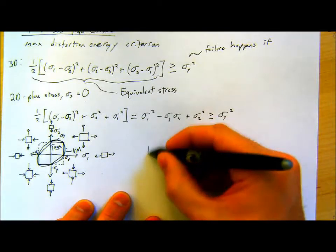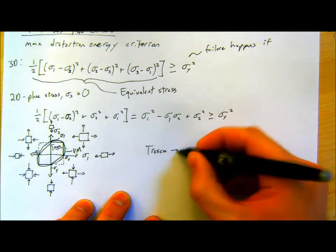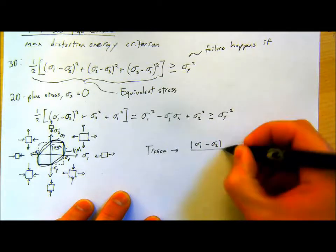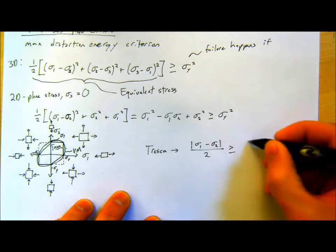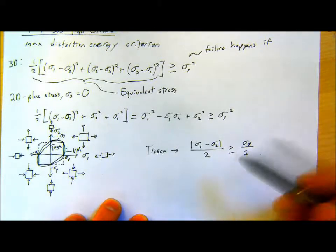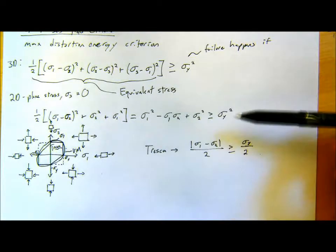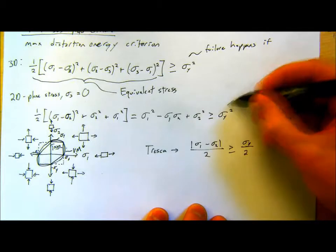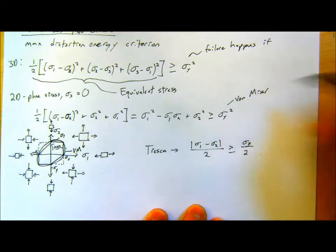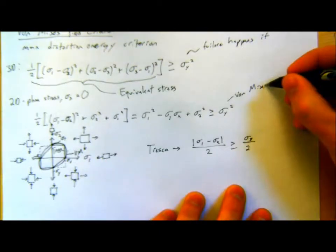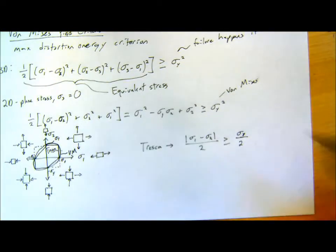Just as a reminder, our Tresca criterion in 2D is: when the absolute value of sigma1 minus sigma2 over 2 is greater than or equal to the yield strength over 2, failure happens there. I'll use both the Von Mises criterion and the Tresca criterion in these examples and show how both of those get used.